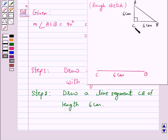Now, according to our rough sketch, at C, we have to draw CX perpendicular to CB. So, our next step is at C, draw CX perpendicular to CB.